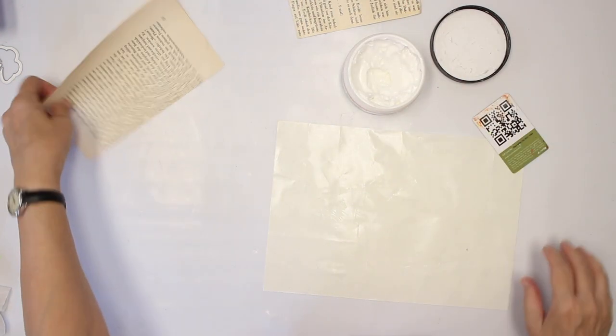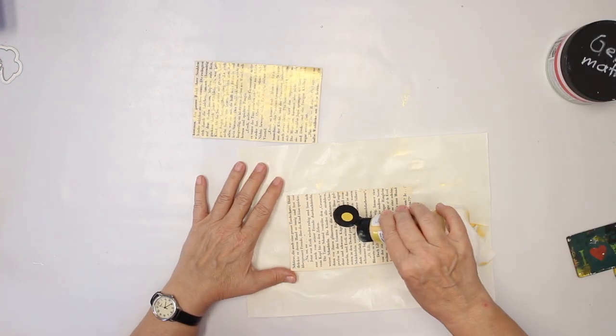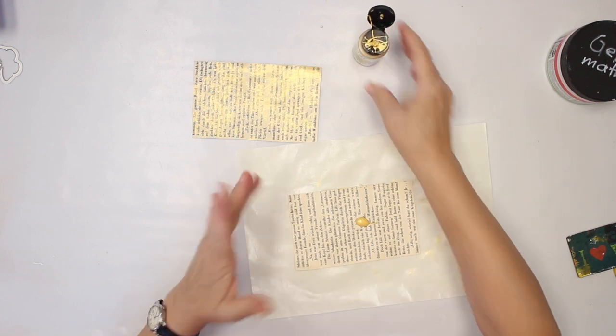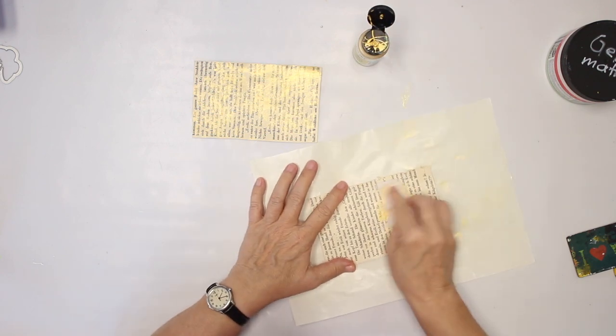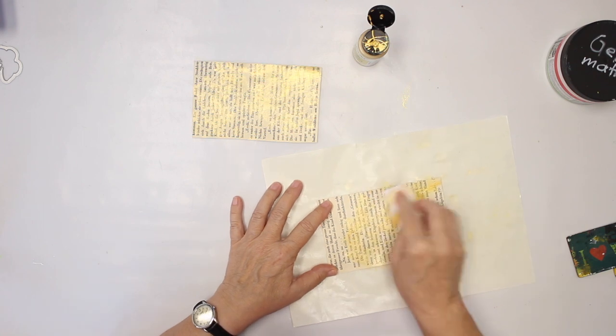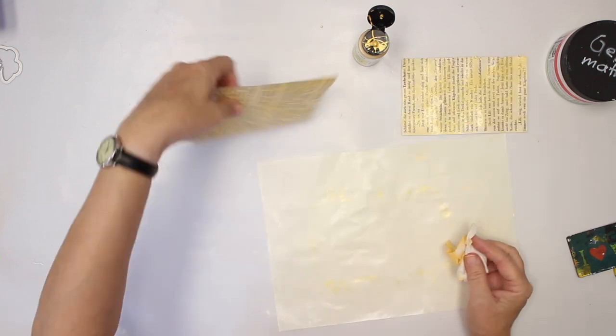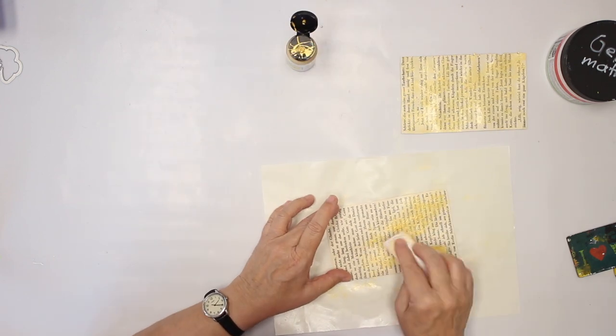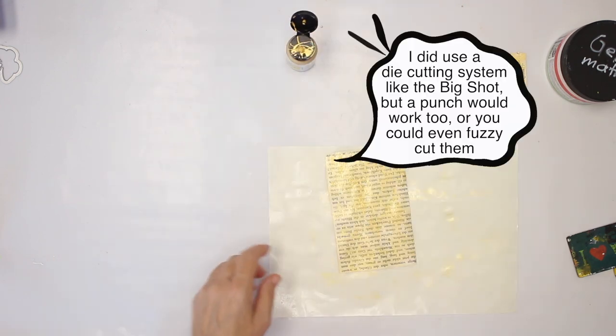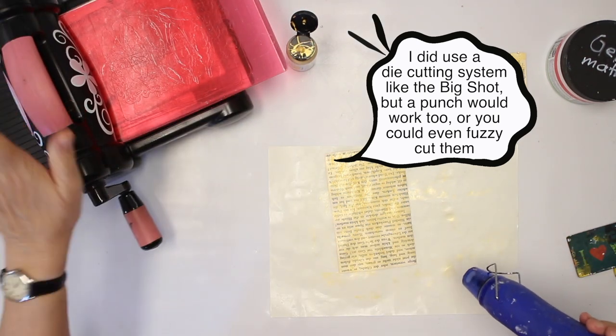I'm going to do the second page and then I will be back. So my next step is adding some transparent gold paint. I just want a little bit of shine and I don't want to cover up the text. Now that has to dry again before I can run it through my Big Shot.